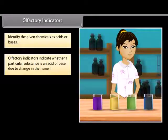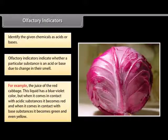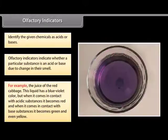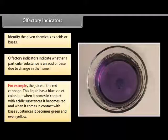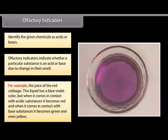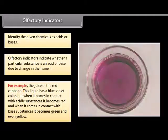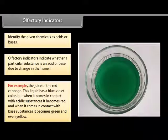An olfactory indicator works on the principle that when an acid or base is added to a substance, its odor cannot be detected. For example, the juice of the red cabbage has a blue-violet color. But when it comes in contact with acidic substances, it becomes red, and when it comes in contact with base substances, it becomes green and even yellow.